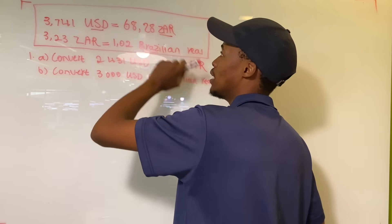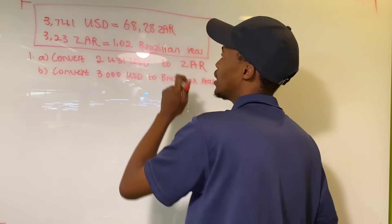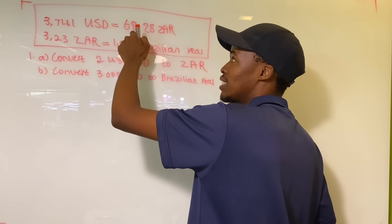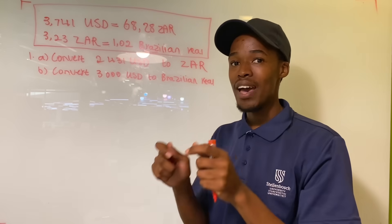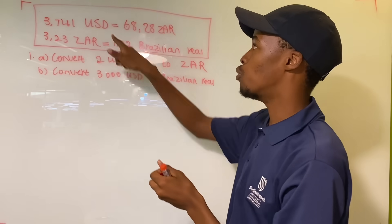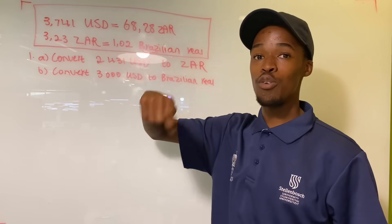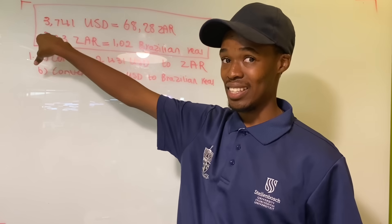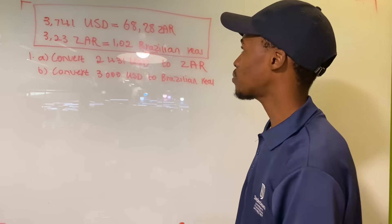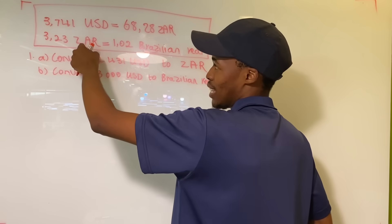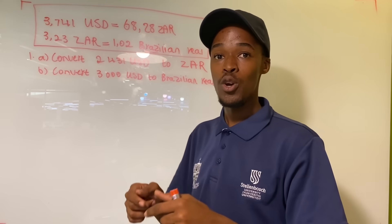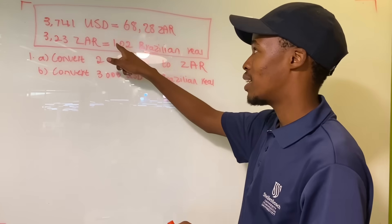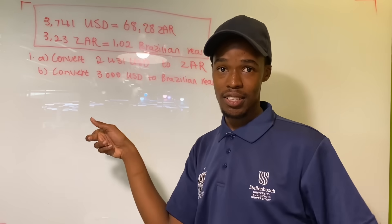This information we've been provided with basically means that 3.741 US dollars is equal to 68 rand 28 cents. So if you have 68 rand 28 cents and you move to the US, when you get there and they convert your money to their currency it's going to be 3 dollars 74 cents. Same thing with the rand and real: 3 rand 23 cents converts to 1 real 2 cents.